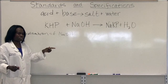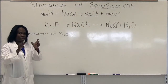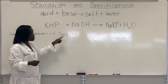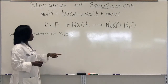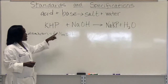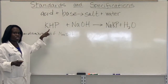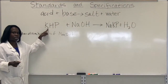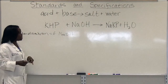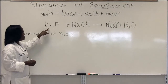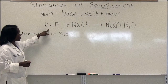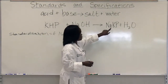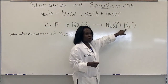You have to first determine if the concentration you're given is the actual concentration. In order to standardize your sodium hydroxide, you have to titrate it against a known concentration of an acid. In this case, the acid is called potassium hydrogen phthalate — that is the acid we're going to use. So potassium hydrogen phthalate plus sodium hydroxide gives you your salt and your water.